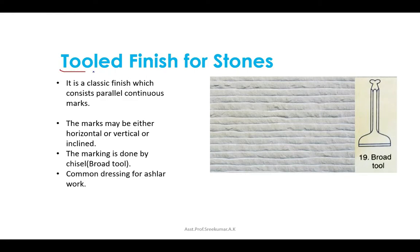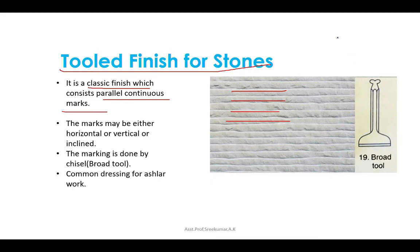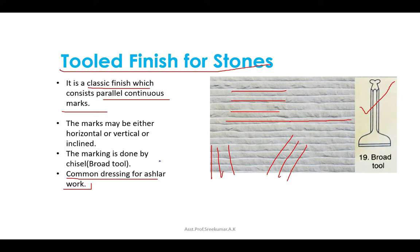The tool finish is a classic finish consisting of parallel continuous marks. The dressing is done as a further step to boasting: after boastering the surface, a series of continuous and parallel fine chisel lines are formed with the help of a batting or broad tool. This is a common dressing for ashlar work and the lines are deeper and continuous, and may be horizontal, vertical, or inclined.